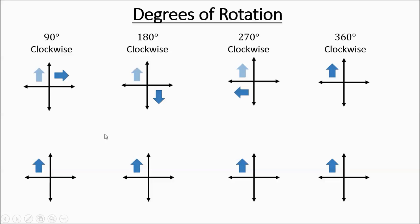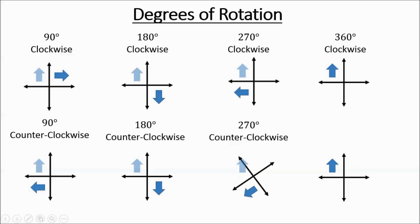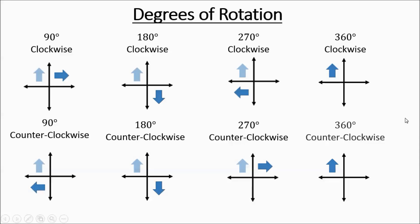Now we're going to do some counterclockwise spins. We've got the arrow down here on the bottom left. It's as if you put your pointer finger right on the origin and you're spinning. So 90 degrees counterclockwise, it's going to be down there — it was pointing up, now it's pointing sideways. For 180 degrees, it was up and then down. 270, you're just spinning around almost a full circle, but not quite. And then for 360 counterclockwise, it's back where it was in the beginning.